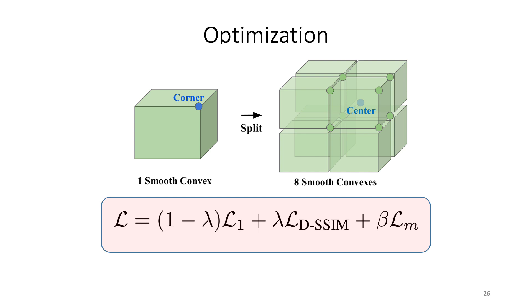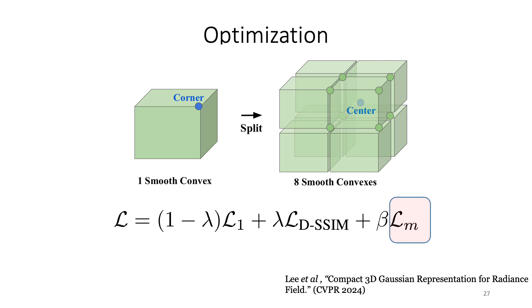And we also use specific densification strategy tailored to 3D smooth convexes by splitting the smooth convex to K number of convexes, each corresponding to the corner point of the smooth convex, and also preserving the original shape of the smooth convex. We control this by different factors like the opacity and the smoothness of the smooth convex. This mask loss was adopted from the CompGS paper. Please refer to that paper for more details about this mask loss.